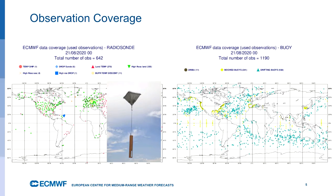One of the key things are the observations. We need to know what is actually happening around the world at once, so we can get our initial condition — we can find out the best state of the atmosphere — and then we can run our model system from there.